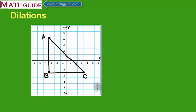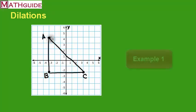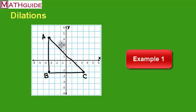This is MathGuide.com. My name is Mark Karadimos. We're going to take a look at a dilation problem. In order to do dilations, you have to be given some shape, and in this case it's a polygon, and this polygon is a triangle.